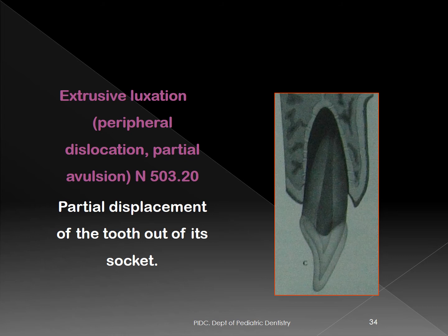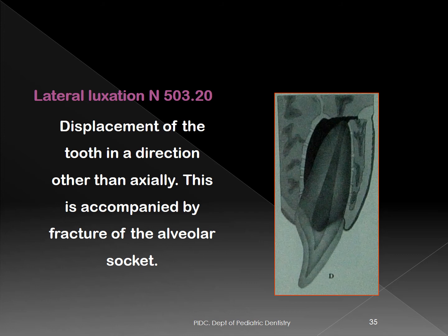If the tooth moves in the socket in the apical direction, it is called intrusive luxation. Lateral luxation means the tooth has moved laterally — the crown moves palatally while the root moves buccally, with fracture of the alveolar process. Lateral luxation can be in the palatal or labial direction.